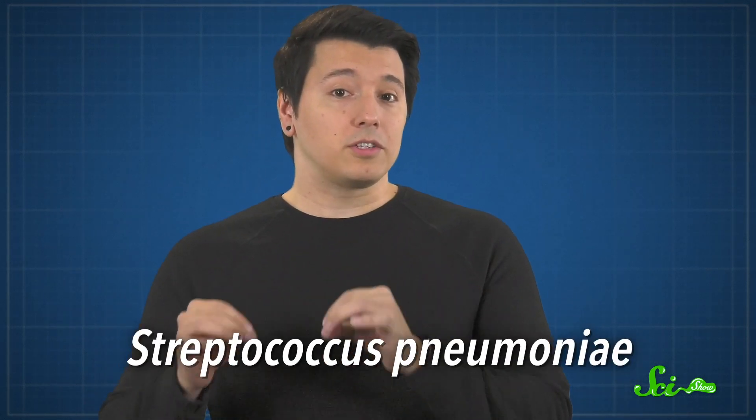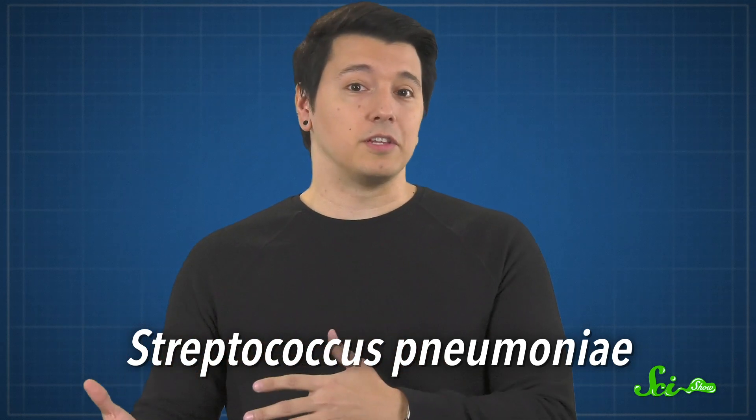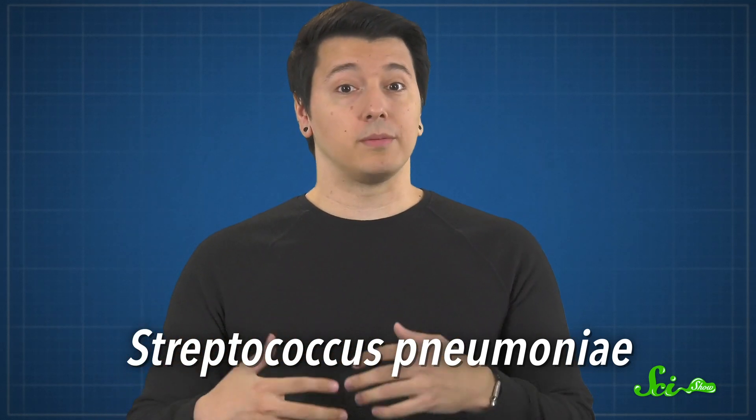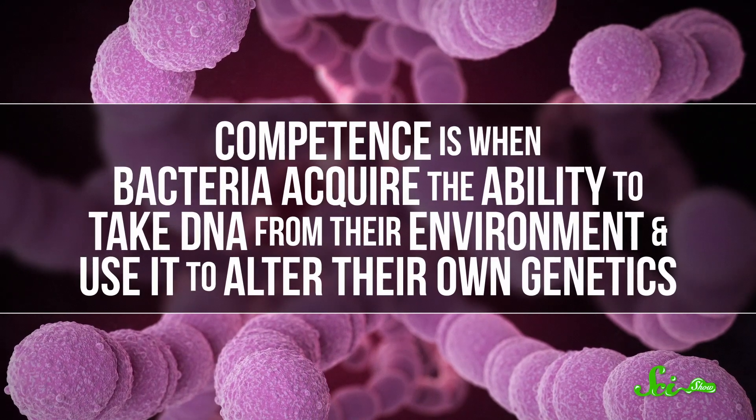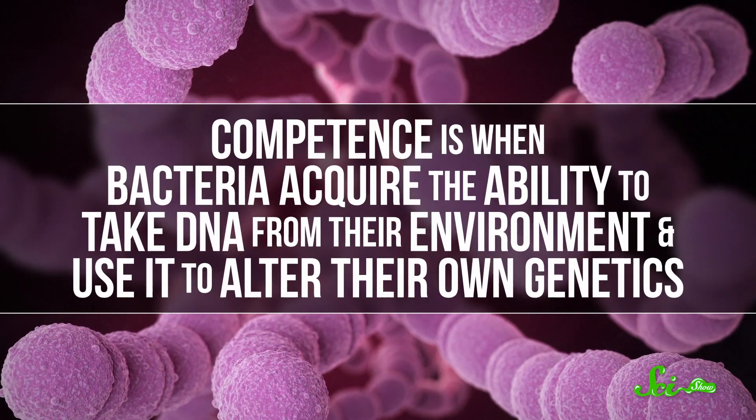For instance, Streptococcus pneumoniae, a bacteria that can cause pneumonia and meningitis in humans, commits fratricide when it becomes competent. Competent is an interesting word choice, because it almost makes it sound like the bacteria developed self-awareness or something. But actually, competence is when bacteria acquire the ability to take DNA from their environment and use it to alter their own genetics.